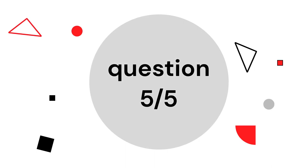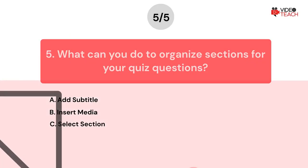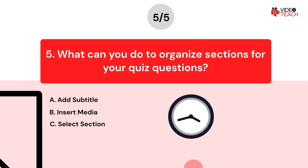Question number five. What can you do to organize sections for your quiz questions? Option A: Add Subtitle. Option B: Insert Media. Option C: Select Section. Now you have about 15 seconds to think about your answer.